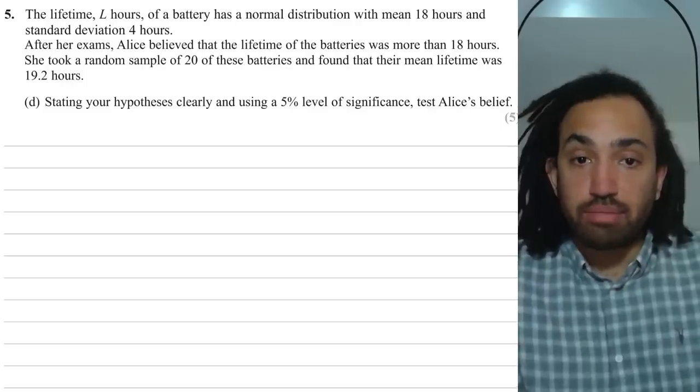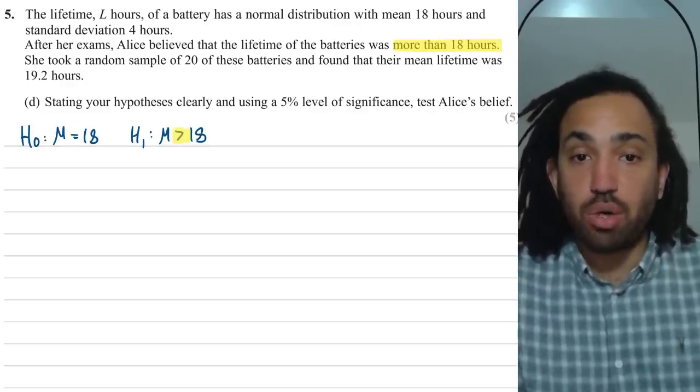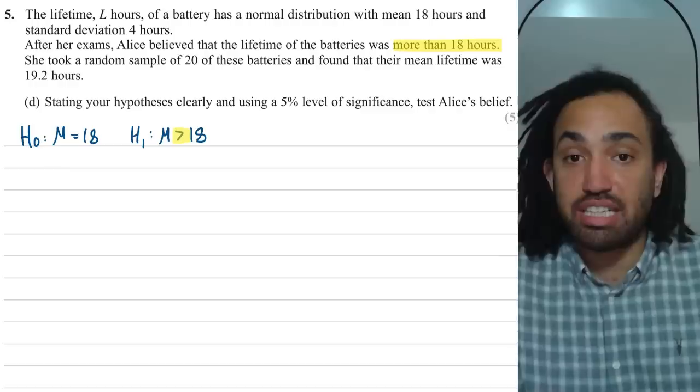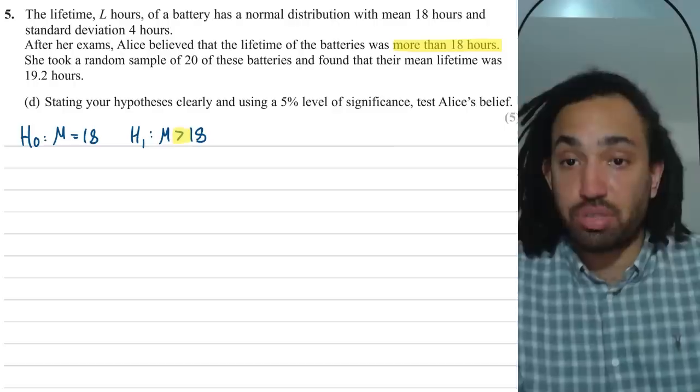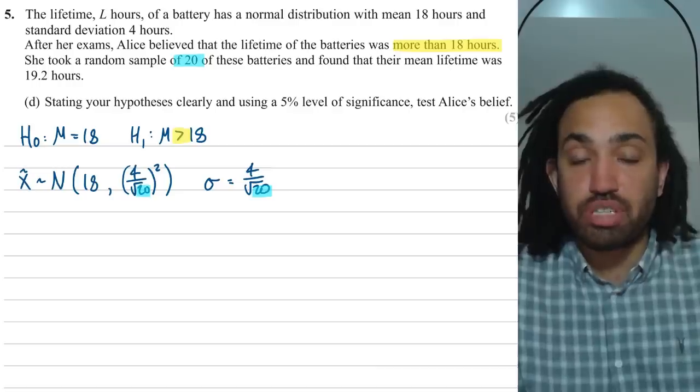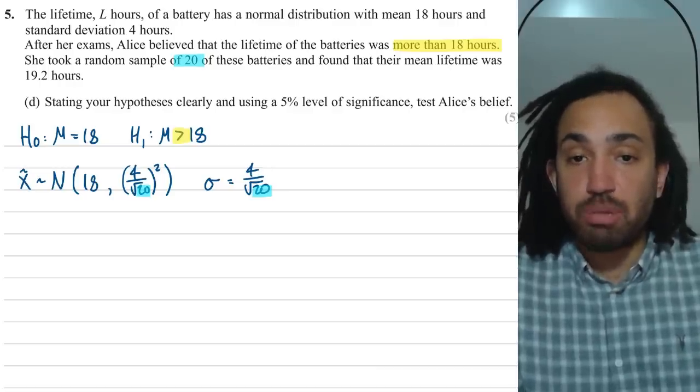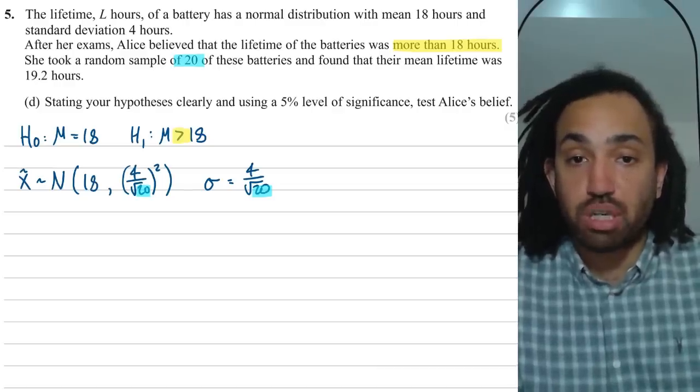Ok, here I've got an example of a hypothesis testing using normal distribution. I start off by defining my hypotheses. We have mu is equal to 18 is the null hypothesis and mu is greater than 18 is the alternate and that's because in the question it says that Alice believes that the lifetime of the batteries was more than 18 hours. Next, I write my sample distribution which is critical because so many people forget to divide the standard deviation by the square root of the sample size.